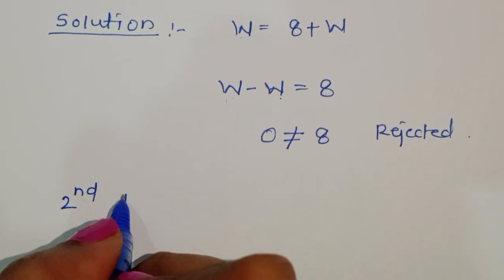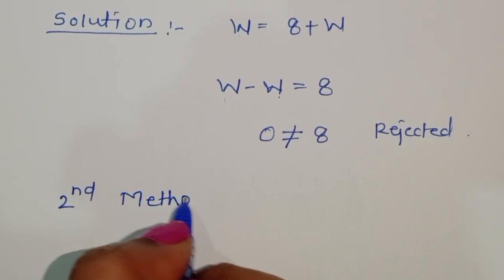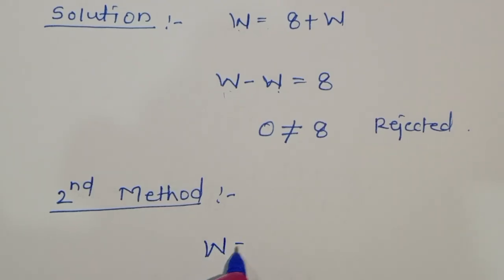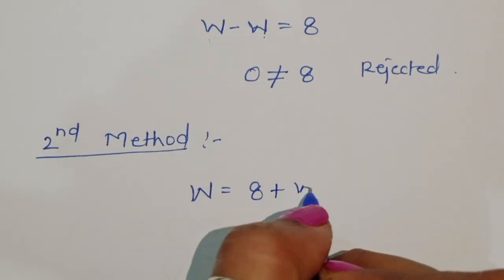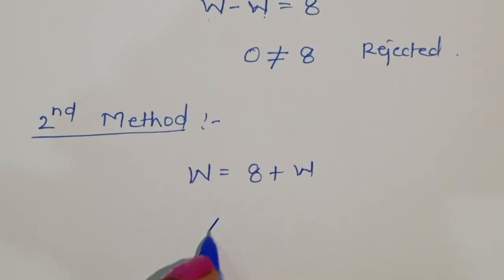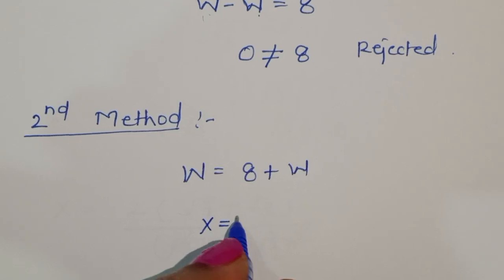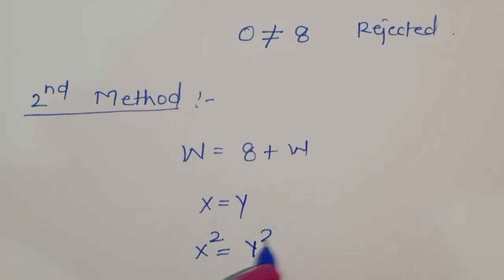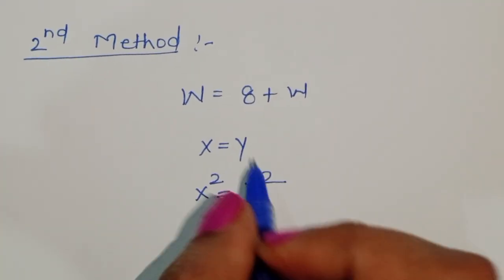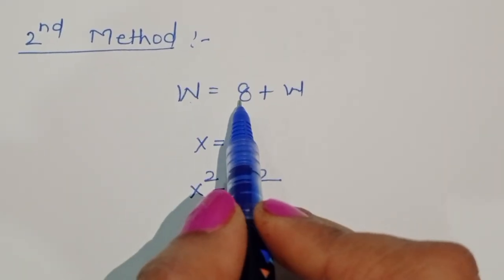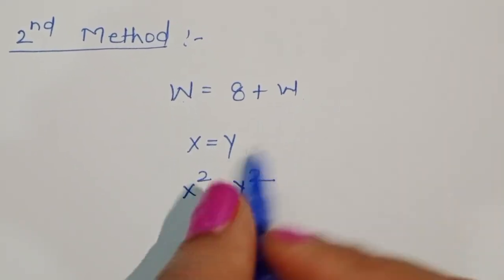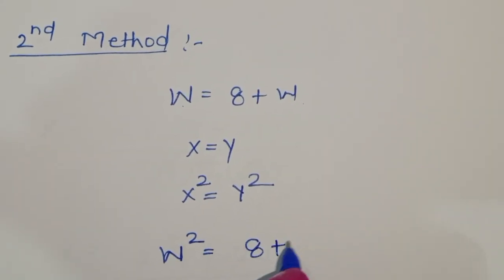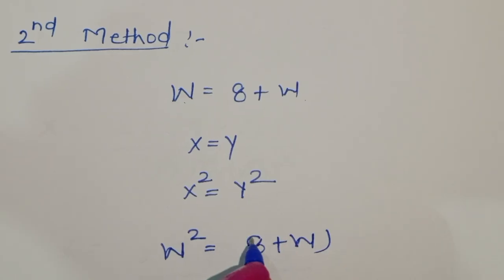In the second method, we have √w = 8 + w. We know that if x = y, then x² = y². Using this, we can say if √w = 8 + w, then (√w)² = (8 + w)², so w = (8 + w)².